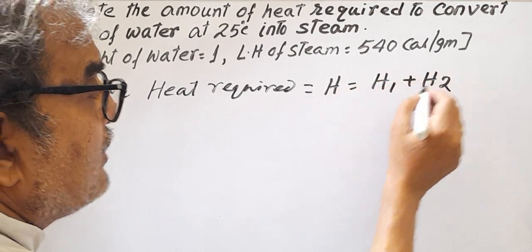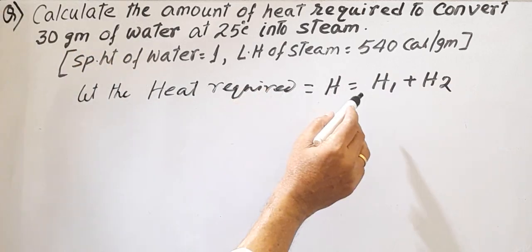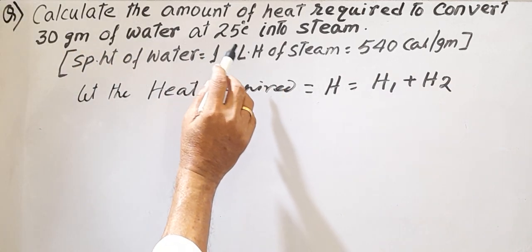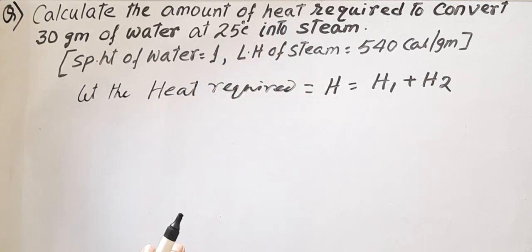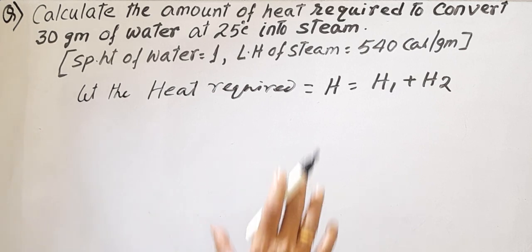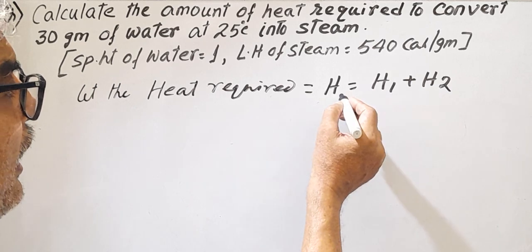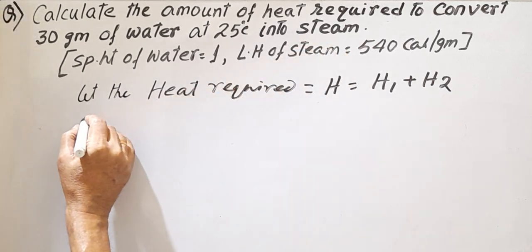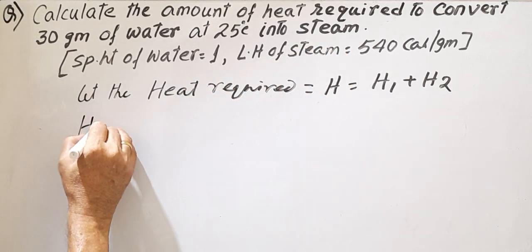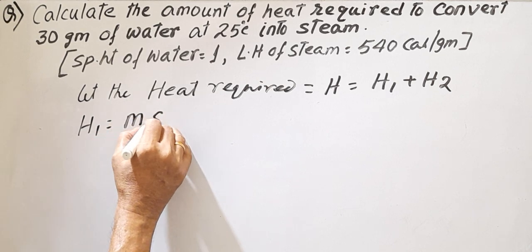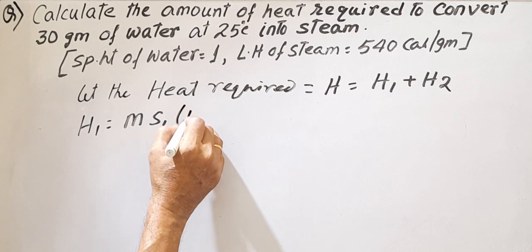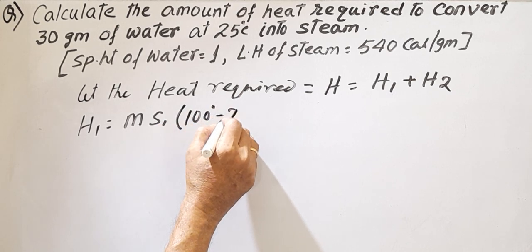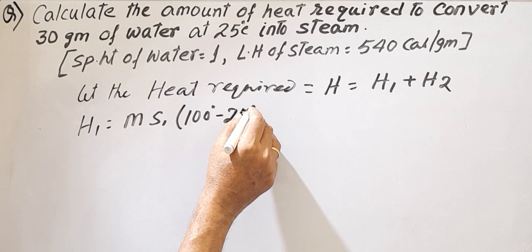Why H1 plus H2? H1 means it is just changing the temperature from 25 degree centigrade to 100 degree centigrade. Try to understand. Then 100 degree centigrade to steam, that is H2 part. So H1 equals M×S×(100°C - 25°C). Simply.